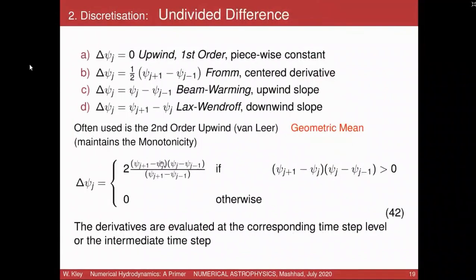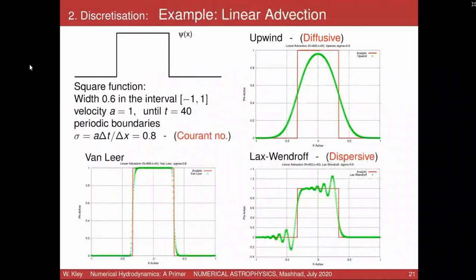If you use the Van Leer slope — developed in the 1970s by Bram van Leer from Belgium — you get a much better green solution: second order in space gives much better results. If you use the Lax-Wendroff method using that slope or directly the two-step equations, you find this behavior: it's not diffusive — the width is similar and it resolves the edge well on both sides — but it leads to numerical oscillations after the edges.